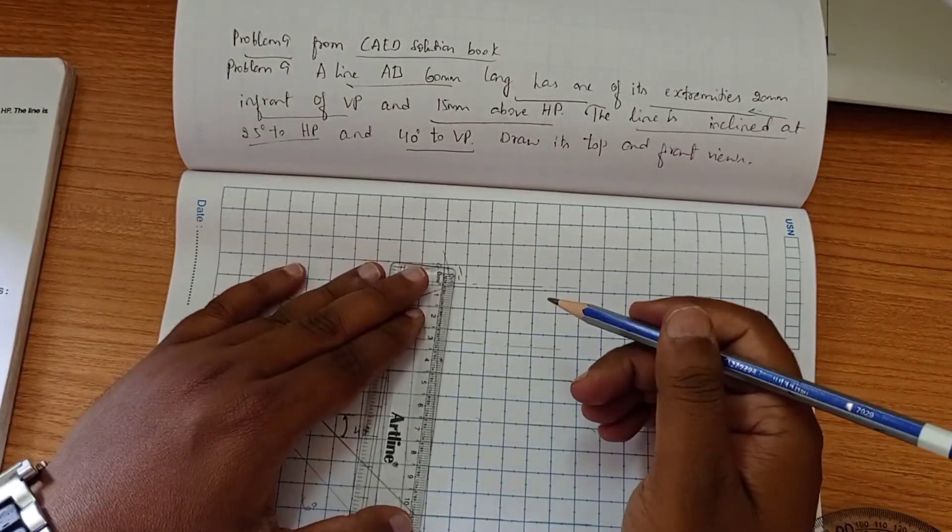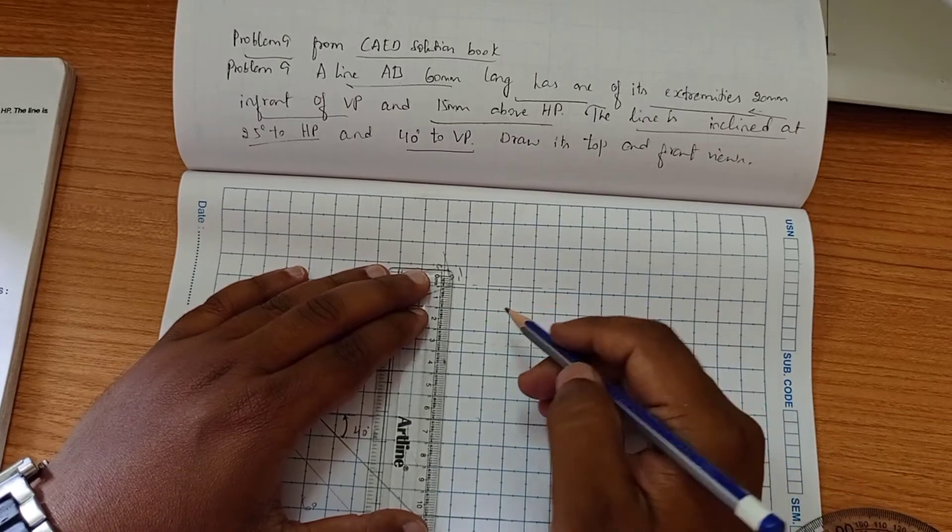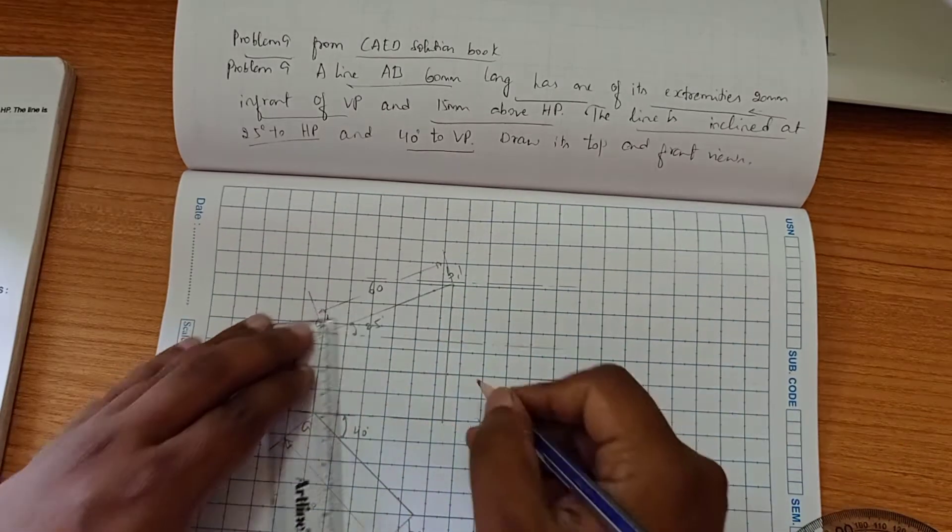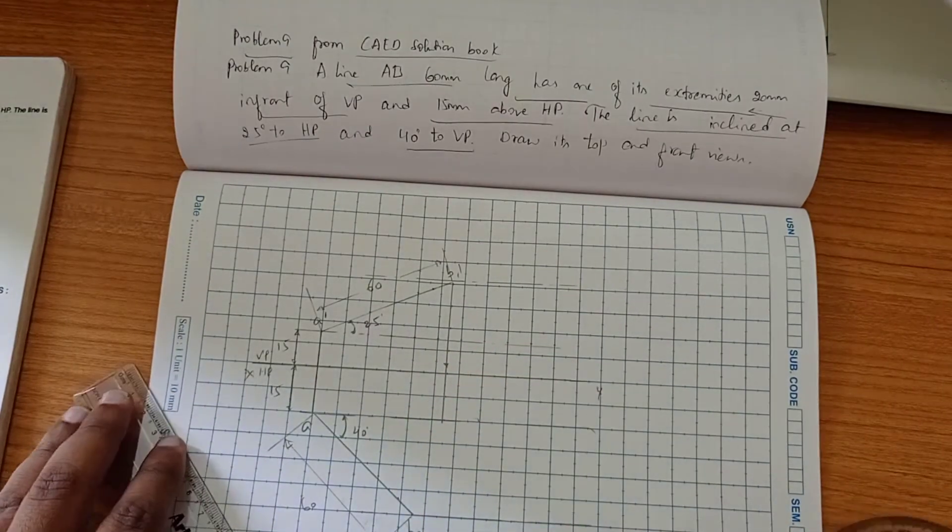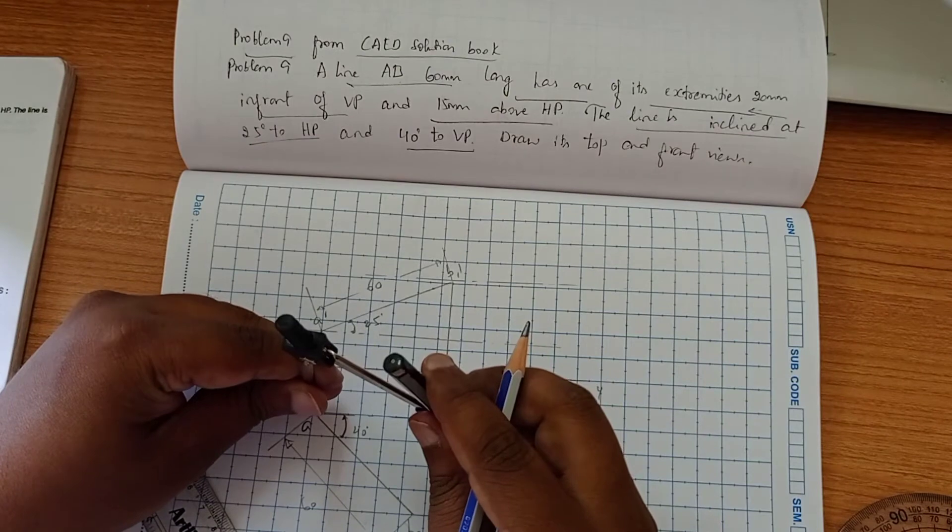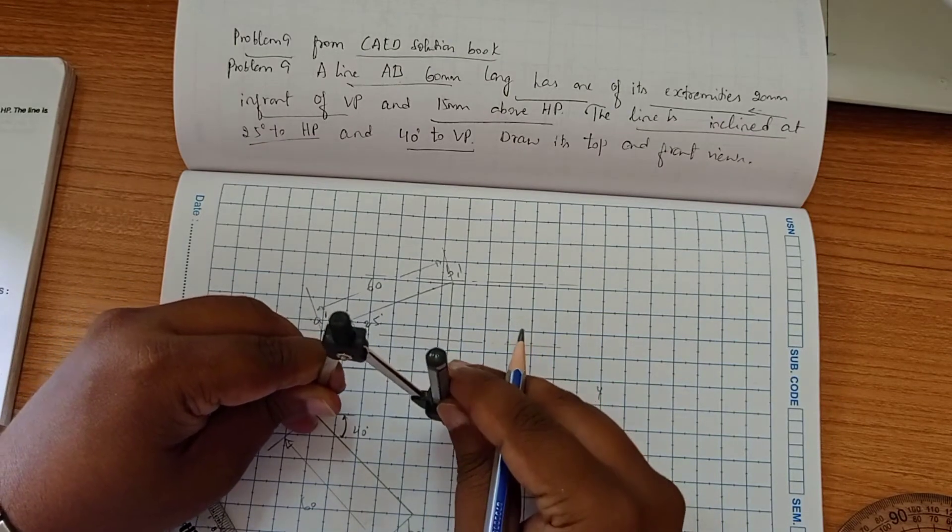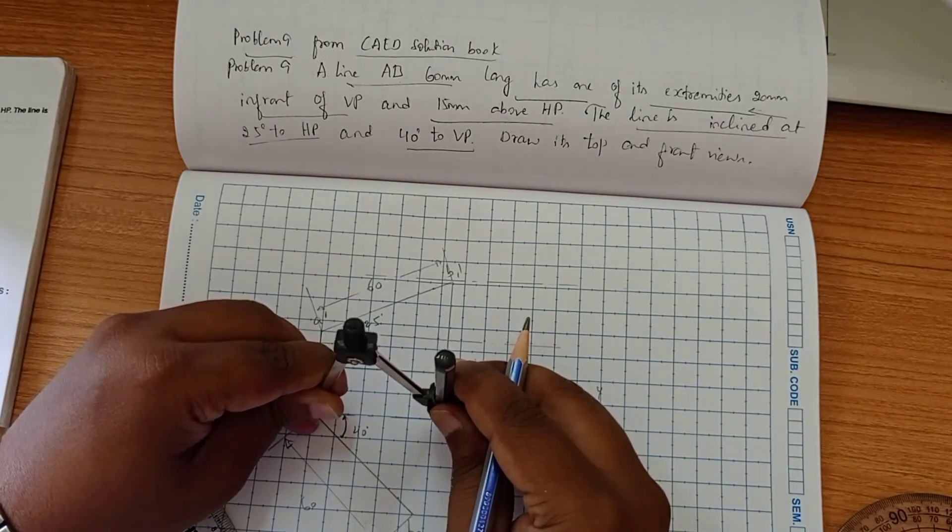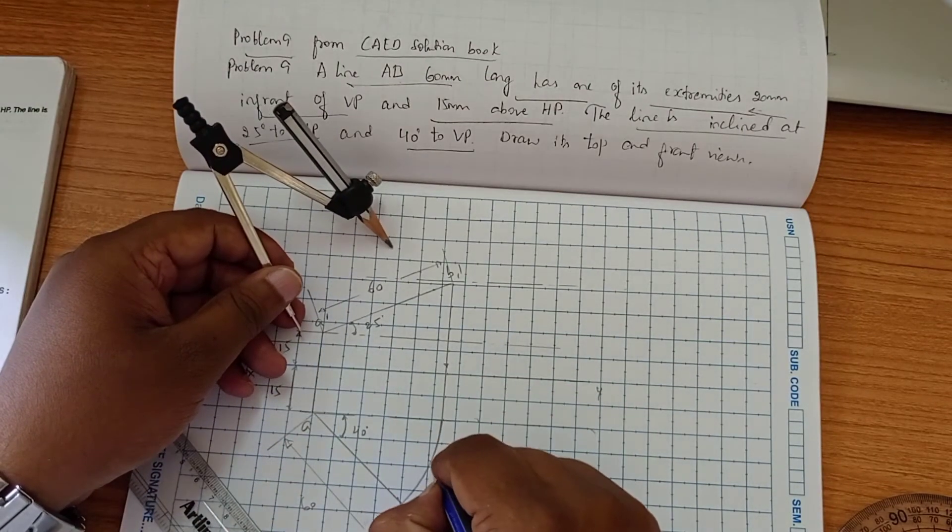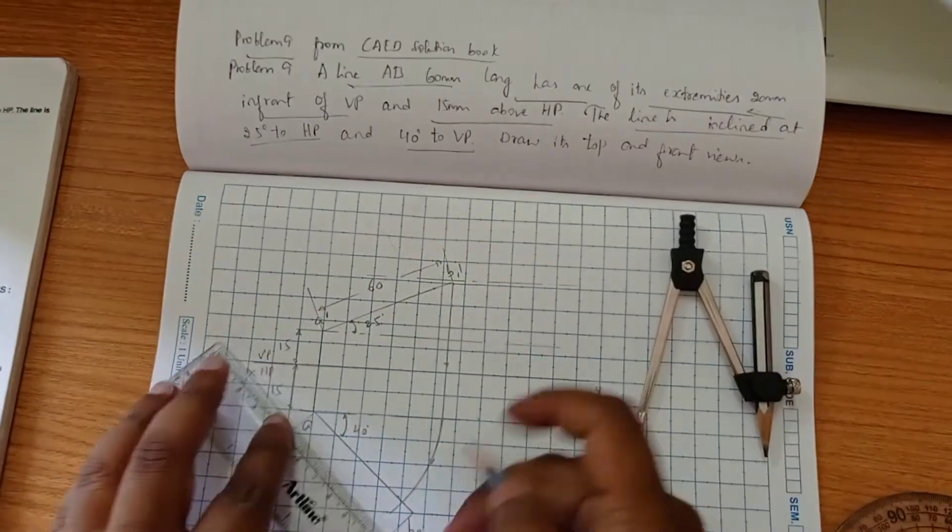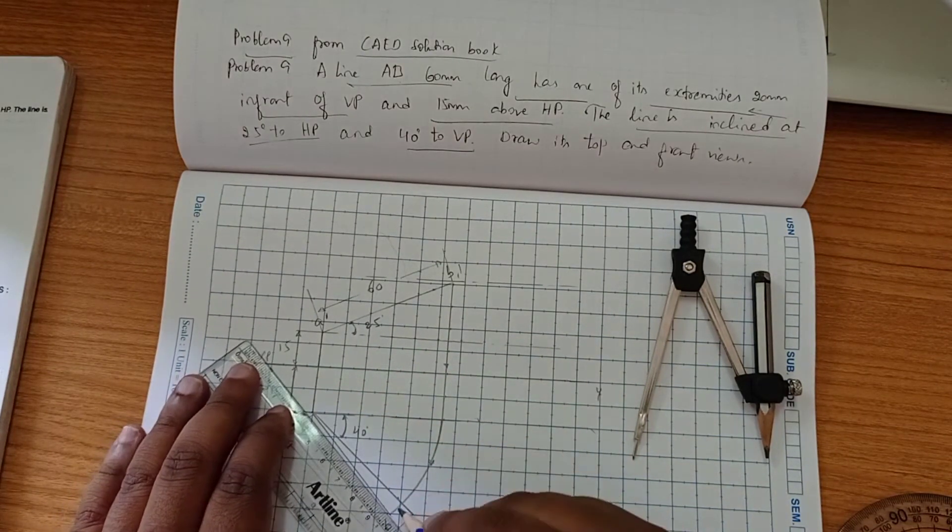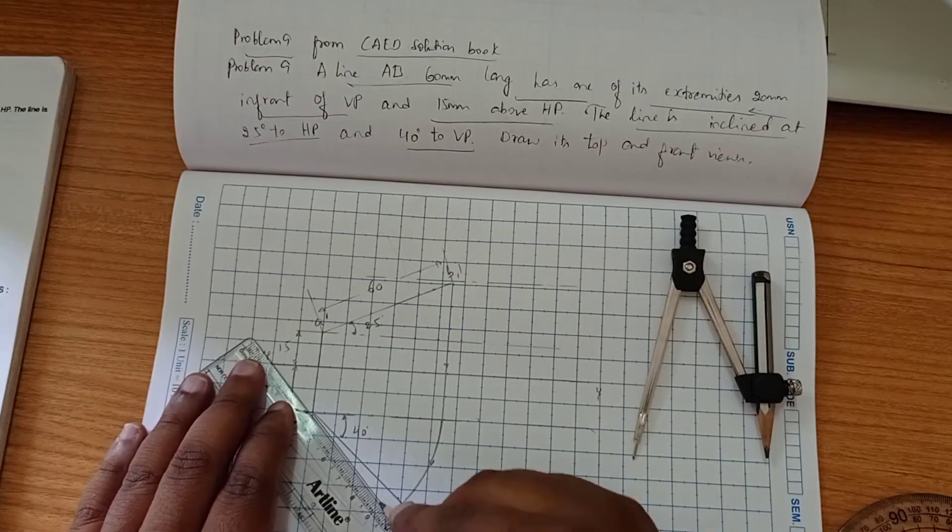This is the true length. Now we have to find out the apparent length. The true length is going vertically downward to the locus of A. Now we have to take the compass and rotate to the left. Here at this point we are getting apparent length. We have to mark this apparent length.